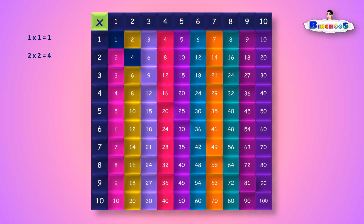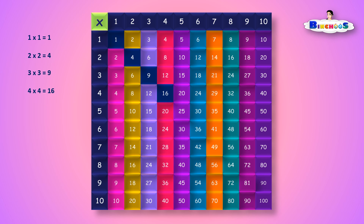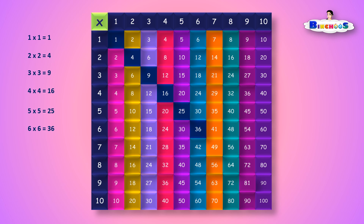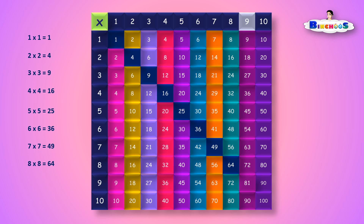1 times 1 is equal to 1. 2 times 2 is equal to 4. 5 times 5 is equal to 25. 6 times 6 is equal to 36. 7 times 7 is equal to 49. 8 times 8 is equal to 64. 9 times 9 is equal to 81. 10 times 10 is equal to 100.